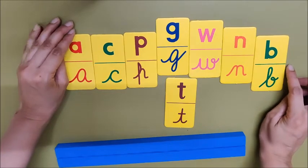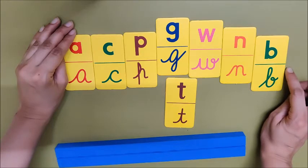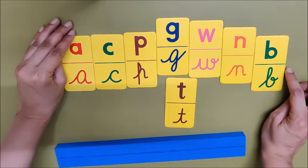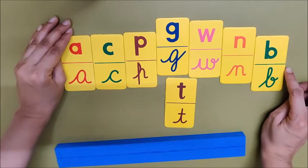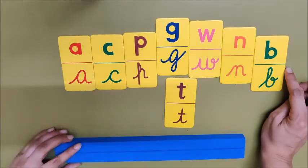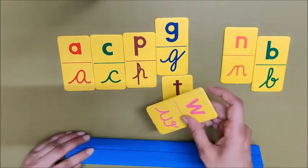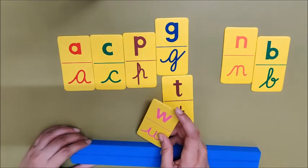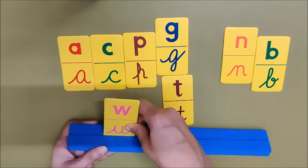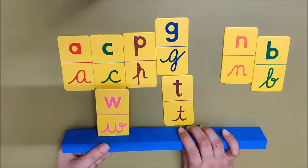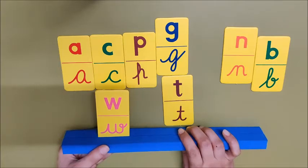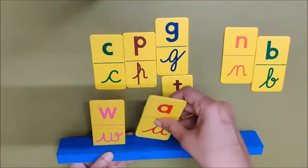Mama is saying to make the word wag. What is the first sound? W. W is the first sound. If you say the word again you will know the first sound. Place W here. What is the next sound? Say the word again - Wag. A. Place A here.